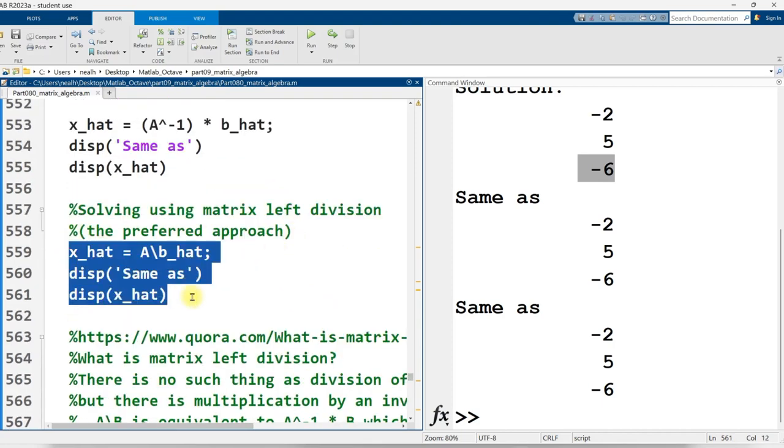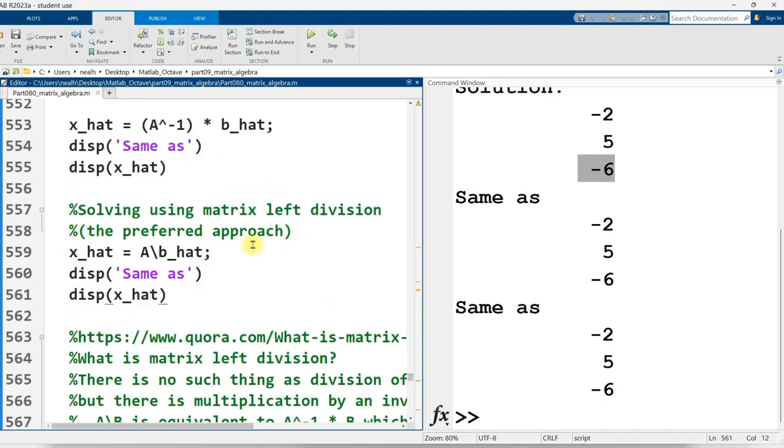Now the third way is actually the preferred method, and it uses something called left division, matrix left division. It's written out like this, A backslash B hat. Normally we divide with a forward slash. The forward slash is like just left of your shift key on your keyboard, but this is a backslash. For me, it's above my enter key, but for you it might be above and slightly to the left of your enter key.